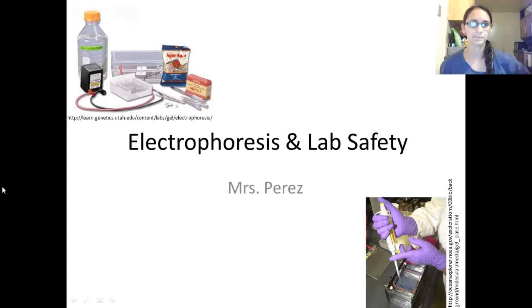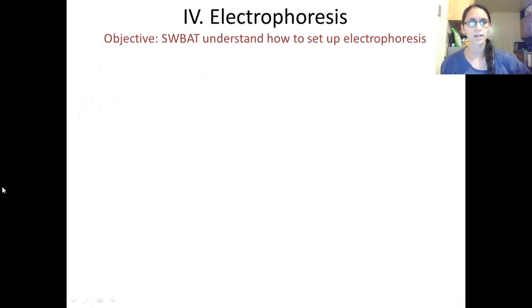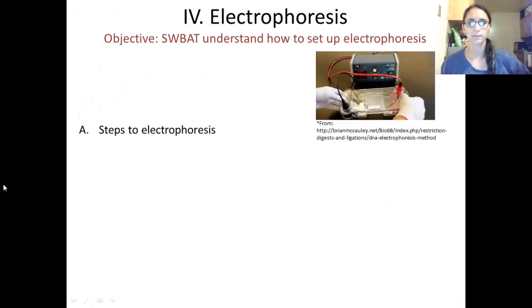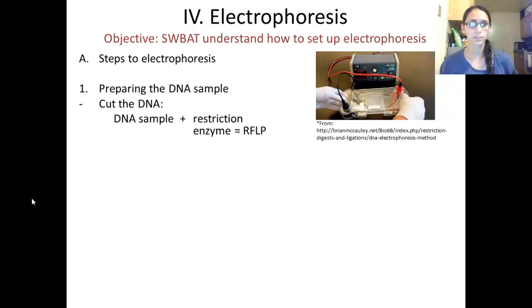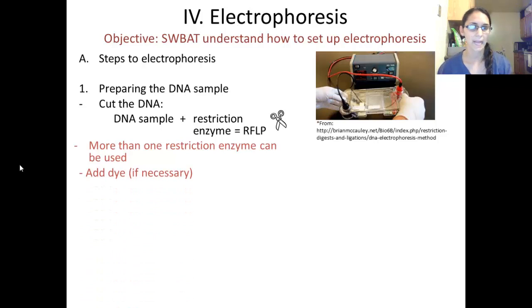Electrophoresis and lab safety. We cut the DNA, and in order to do this we add a restriction enzyme to the DNA sample. A restriction enzyme is like the scissors that cut the DNA sample into smaller fragments. More than one restriction enzyme can be used and you can also add a dye if necessary.